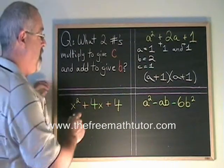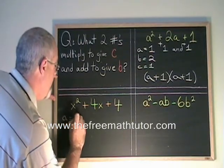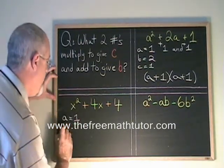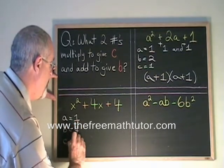Let's do another one. Here, the numerical coefficient of the first term is 1. The second term, it's 4. And the third term, it's also 4.